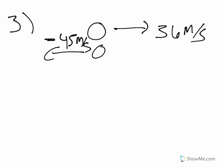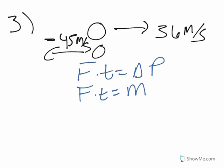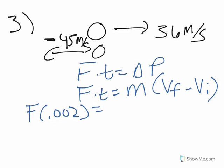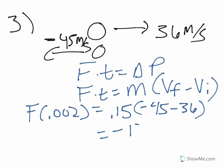We use the formula force times time equals change in momentum, and we know the change in momentum is mass times final minus initial velocity. So we plug in: force times 0.002 equals 0.15 times negative 45 minus 36. That gives us negative 12.5 equals force times 0.002.